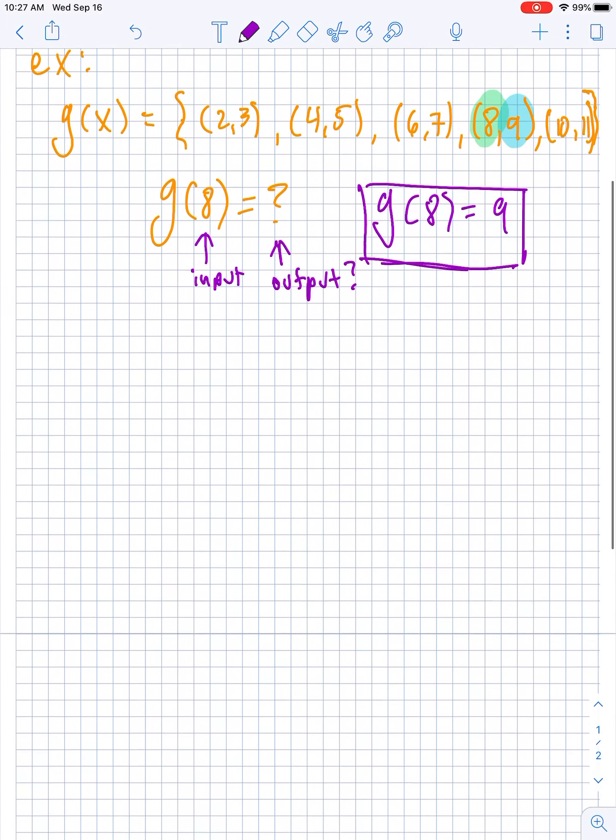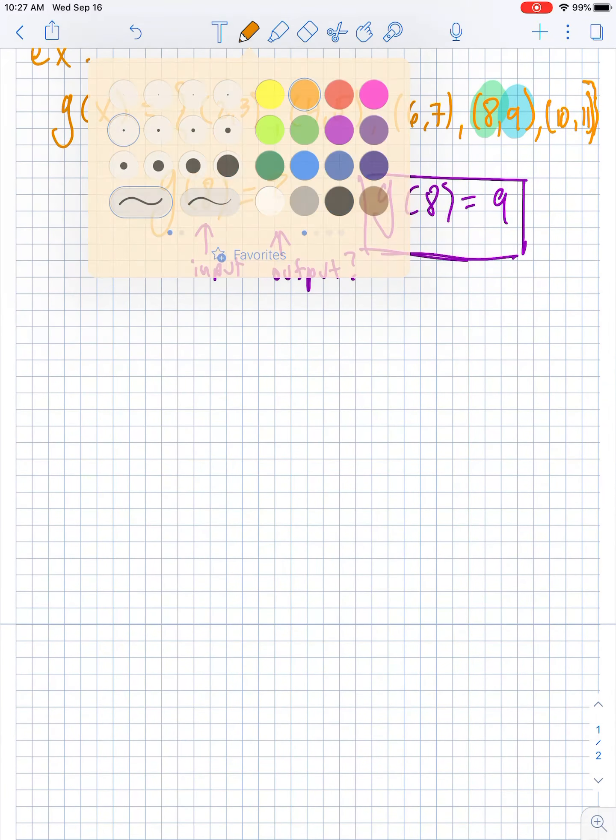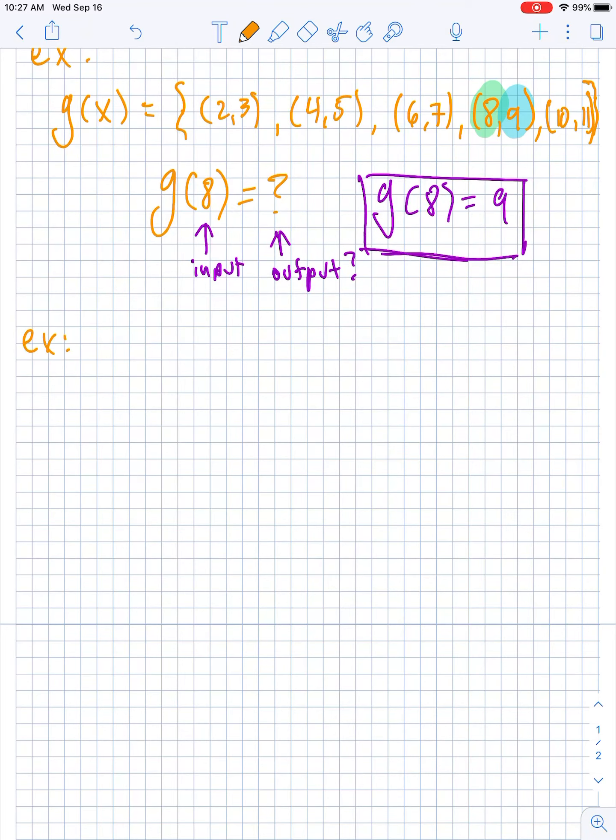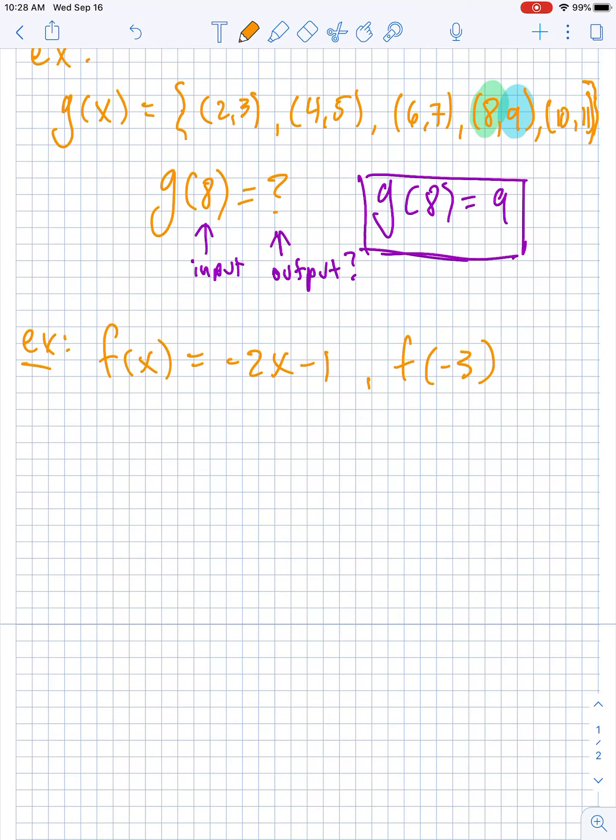Another example. Let's go back to orange. A very common function notation, something like f(x) = -2x - 1, and they want to know what f of -3 would be.